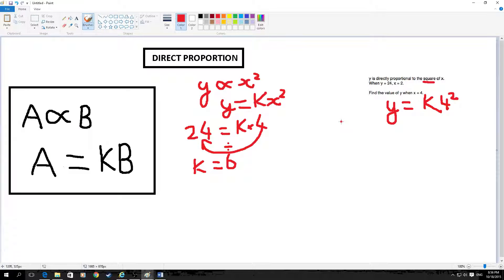So then you know what k is, you just put k in. So then you get y equals 6 times 4 squared.